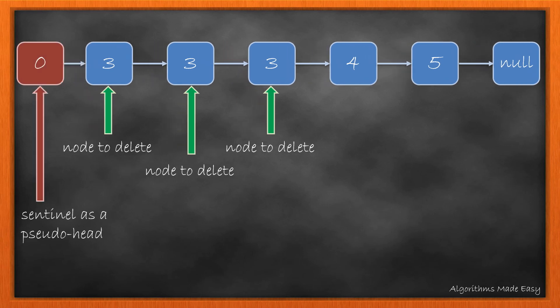This dummy node or pseudo head is also called a sentinel. Now we can eliminate the link between the dummy node and node 3 and update the next of sentinel to point to a correct node, here node 4. We then return the next of sentinel node as the head node while returning the result.